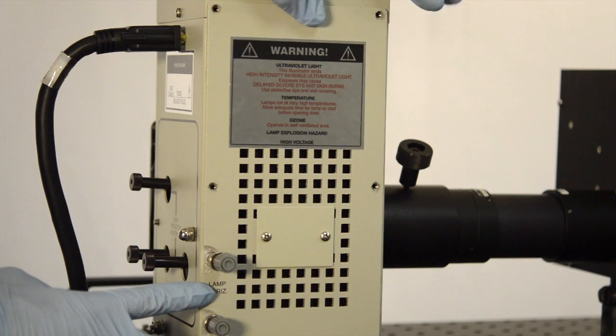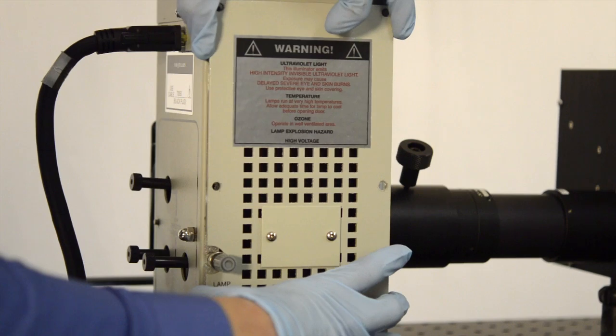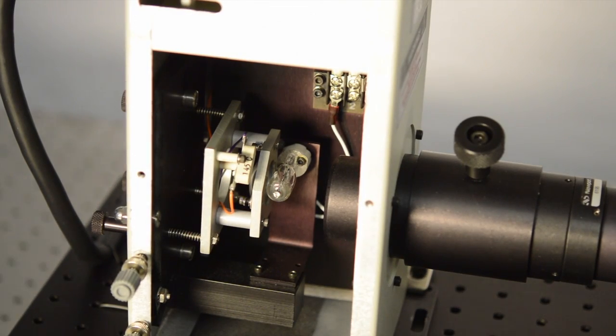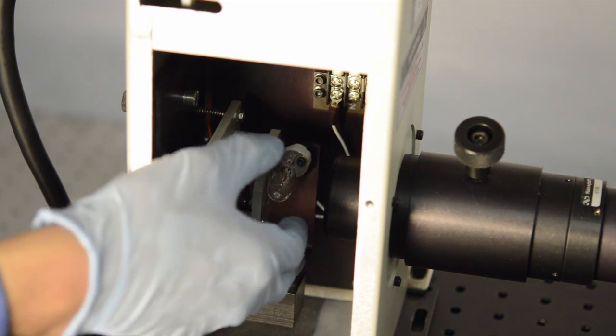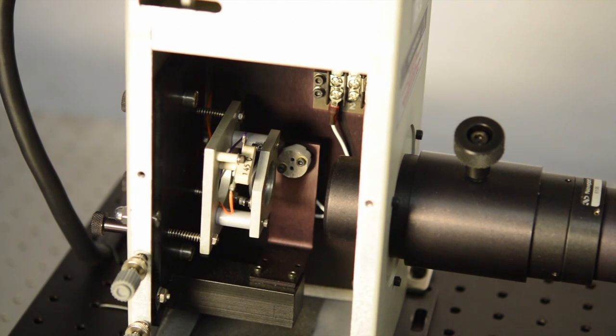After the six thumb screws are removed, you can carefully remove the side panel of this lamp housing. So this is our 250 watt quartz lamp that's reached the end of its lifetime. We're going to remove it from the lamp housing. Very carefully pull it from the socket adapter, it should come out easily. We're going to set that aside and then get our new lamp.